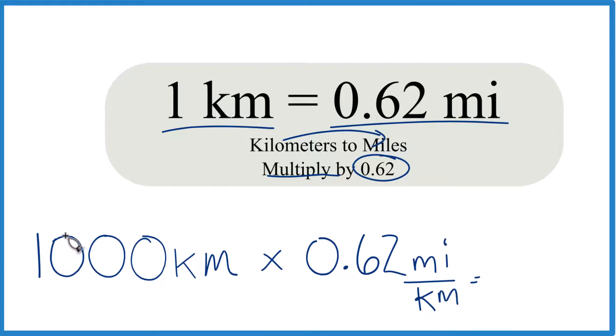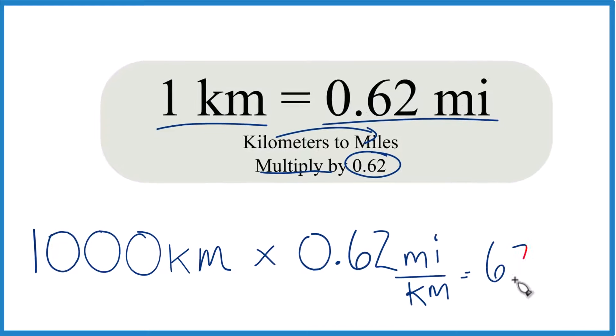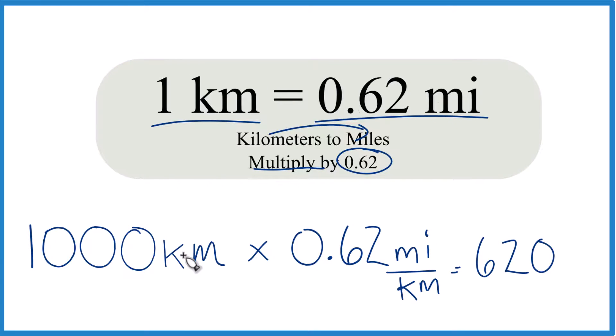Now we do the math. A thousand times 0.62 is 620, and because we had kilometers here and here, they cancel out. We're left with miles. So in answer to our question, a thousand kilometers is 620 miles.